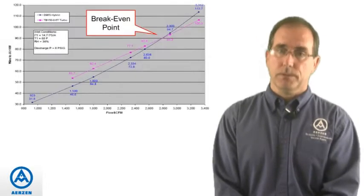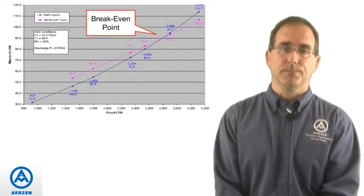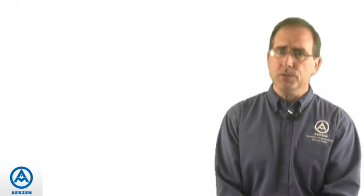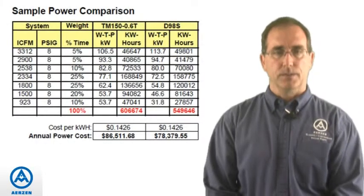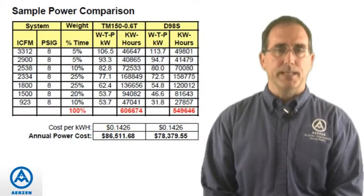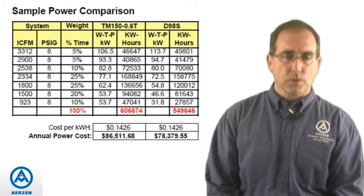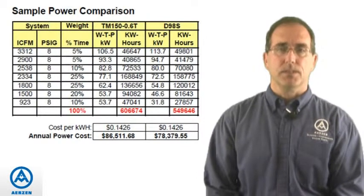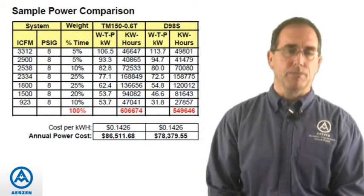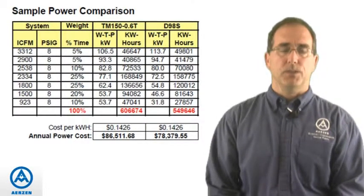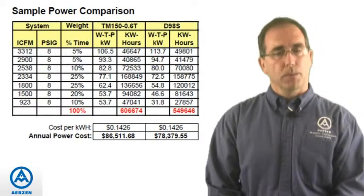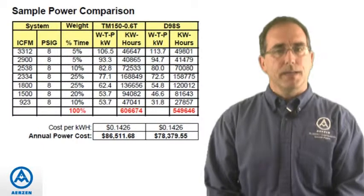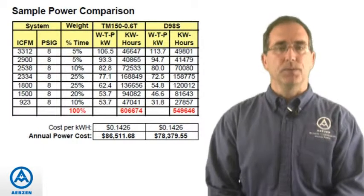Here's one more example where it's pretty much a toss-up between the two. You can see there's a break-even point between the turbo and the hybrid. So what do you do? You do what's called a sensitivity analysis — you take the curve, determine how often the system requires different flows within that range, assign a percentage of time, determine the total power required, annualize it, and add it up. That will help in your decision.